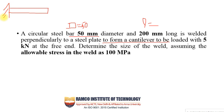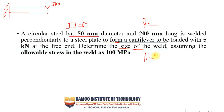The cantilever is to be loaded with 5 kilo Newton at the free end. Can anyone tell me what type of stress is induced? Bending stress — yes, bending stress will be induced. If you have a fixed length and a load applied at the free end, you will have bending stress. The question asks us to determine the size of the weld, assuming the allowable stress in the weld is 100 MPa.